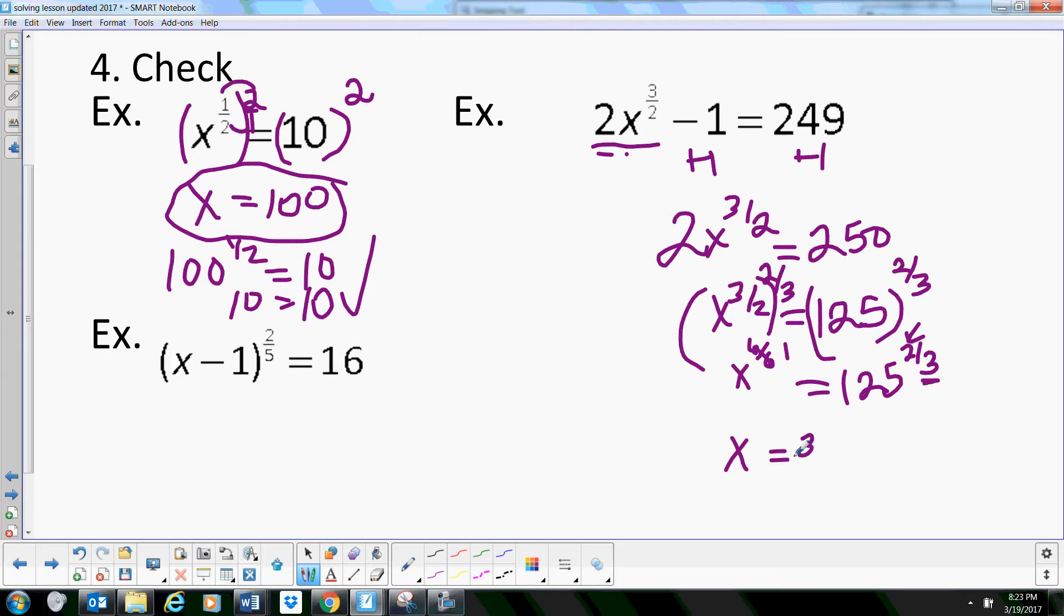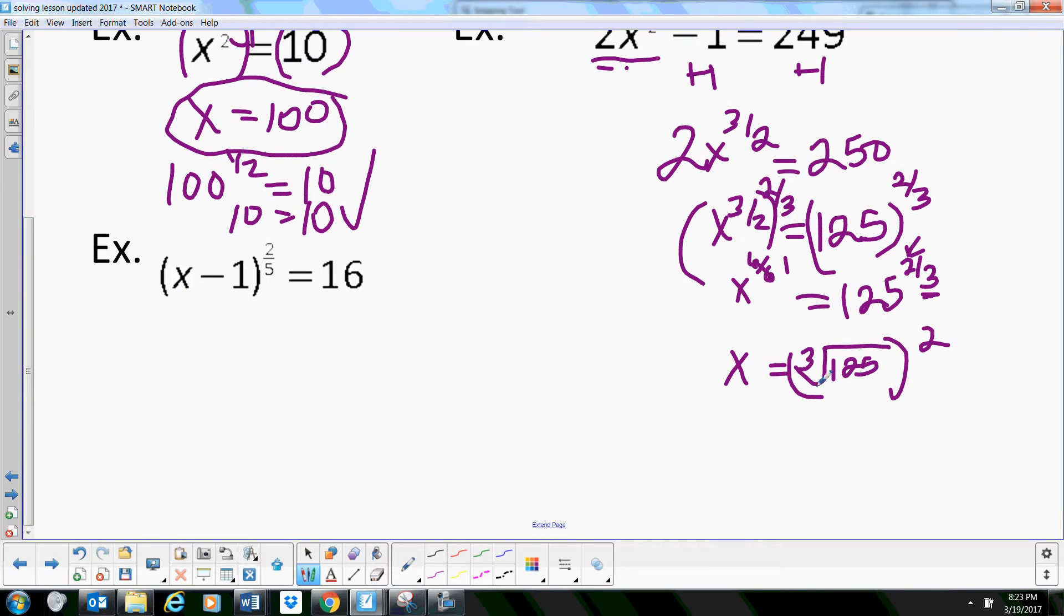So remember, this is the cube root of 125. And we're taking that answer and we're squaring it. So cube root of 125 is, you probably need to know those. We've talked about that. You need to have those memorized. And that is 5 and 5 squared is 25. So there is our answer, 25.